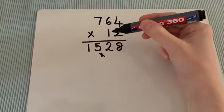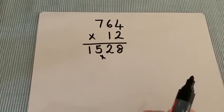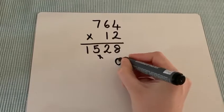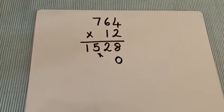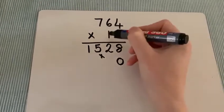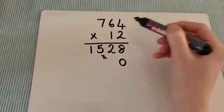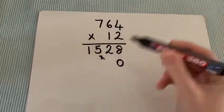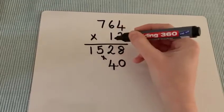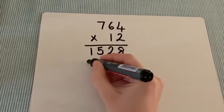Now we're going to shift to look at the 1. Now the 1 represents 10. So we are going to bring a placeholder down straight away. That placeholder comes in and now we can deal with the 1, the 10, as a 1. So 4 times 1 is 4. 6 times 1 is 6. And 7 times 1 is 7.